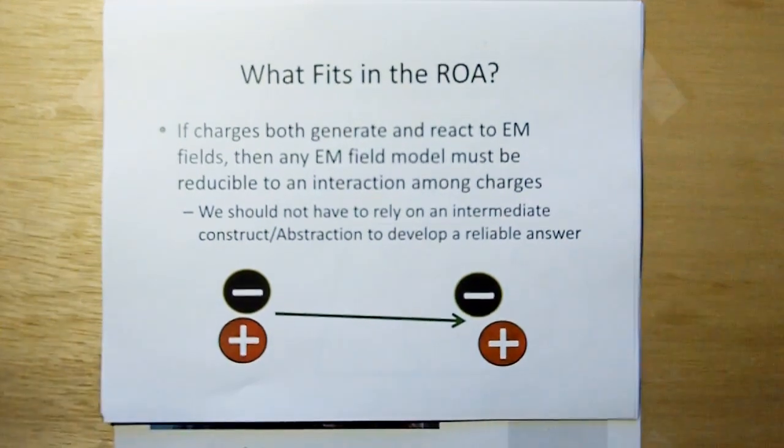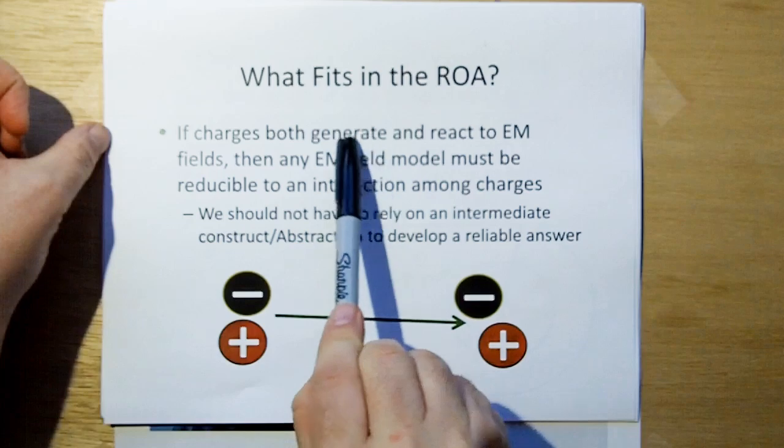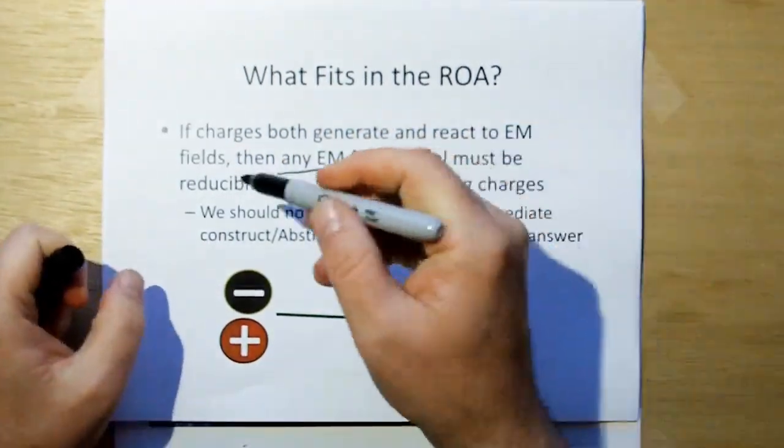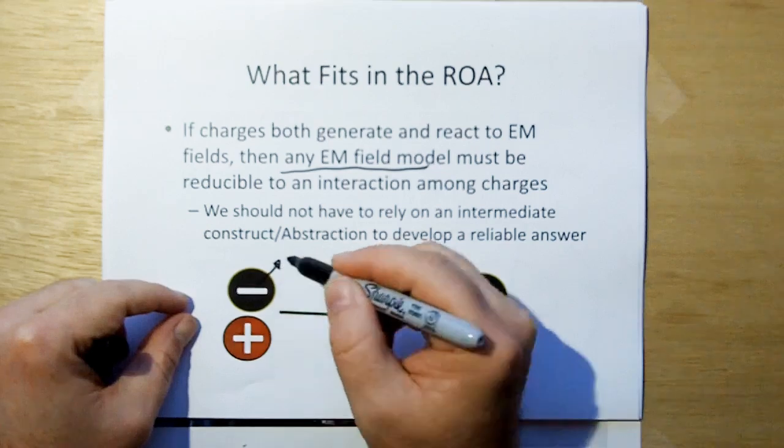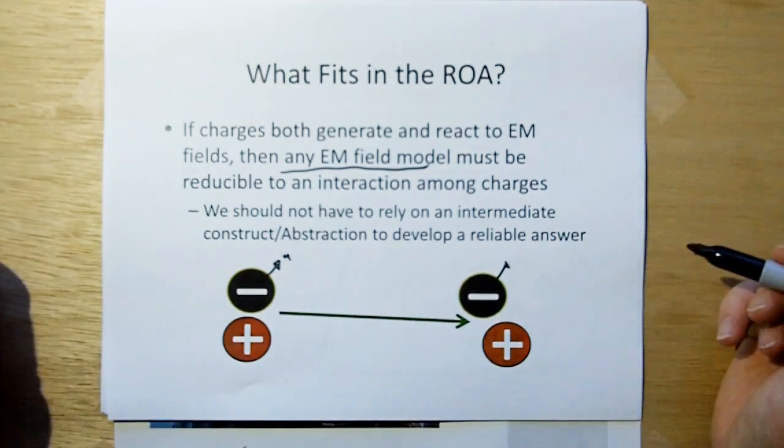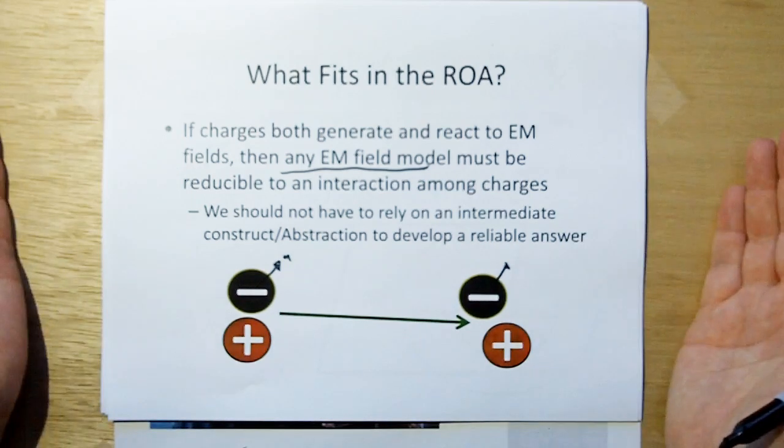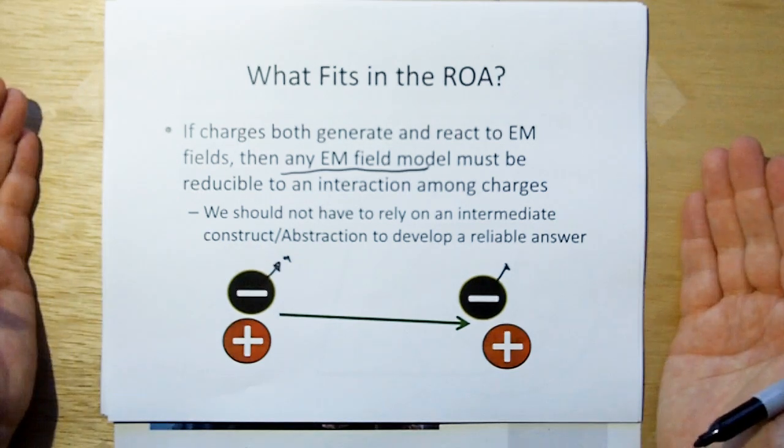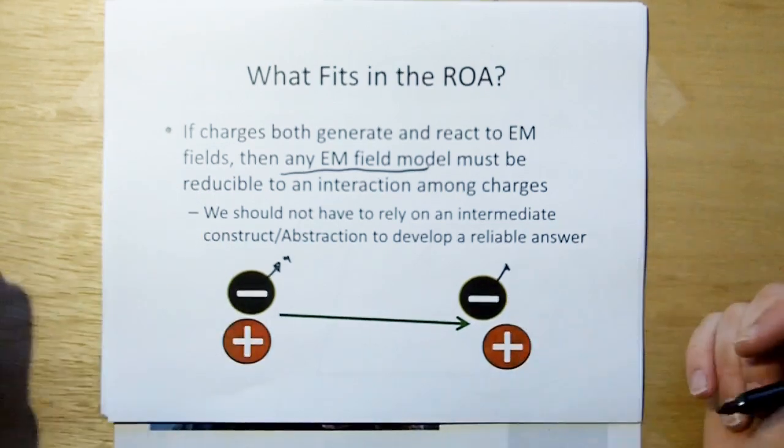Okay, so what does fit within the rules of acquisition? Well, if charges are the fundamental building block of electromagnetic theory and charges both generate or emit fields into space and react to electromagnetic fields, then any EM field model must be reducible to an interaction just among charges. I should be able to come up with a vector equation that says, well, if this guy is moving or accelerating or just standing still, it's going to be able to affect another charge across space in a known and discernible way. We should not have to rely on intermediate field products like they've done in the past. Because, I mean, think about it. How do we measure fields? We measure fields by putting charges in the way. Okay, so all these field models we have are not really true field models. They're mappings of how charges behave when contained in the field. So we've got to be able to reduce stuff down to a charge-to-charge effect.